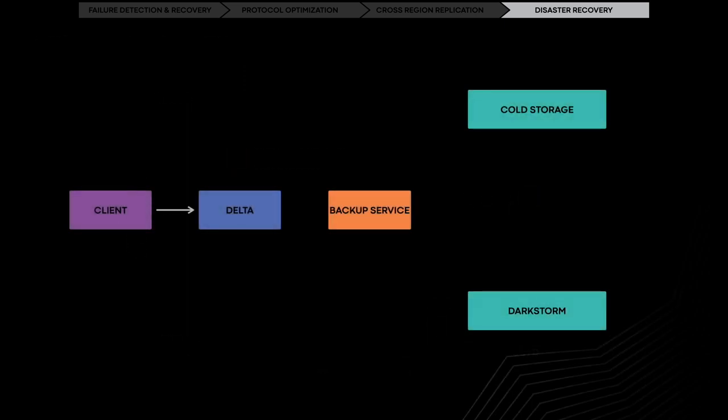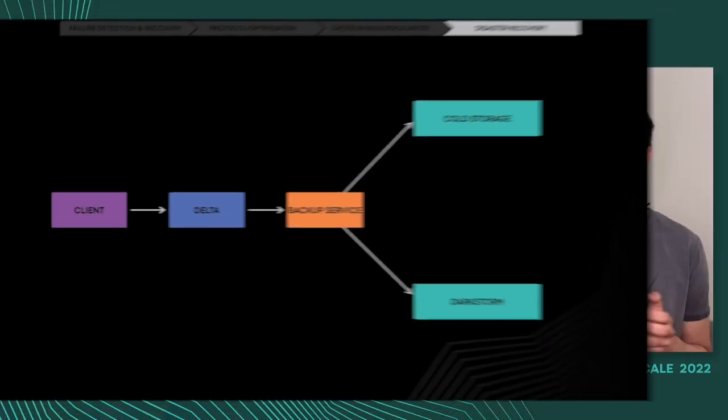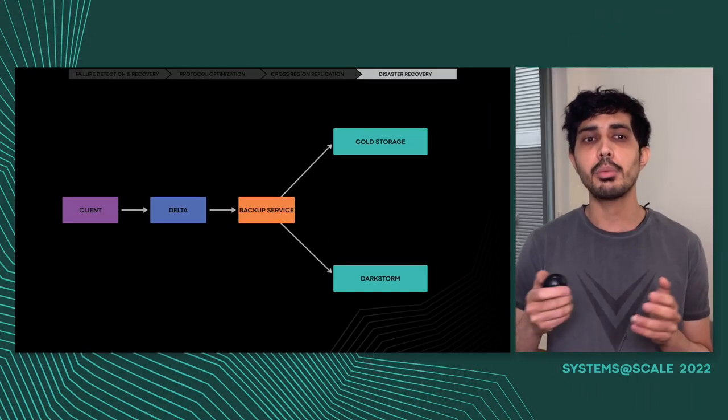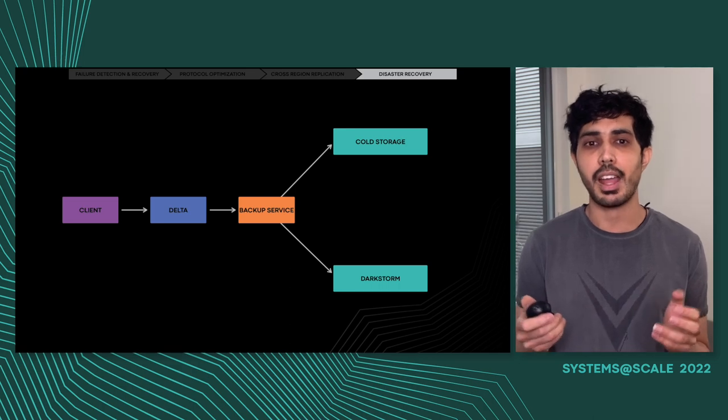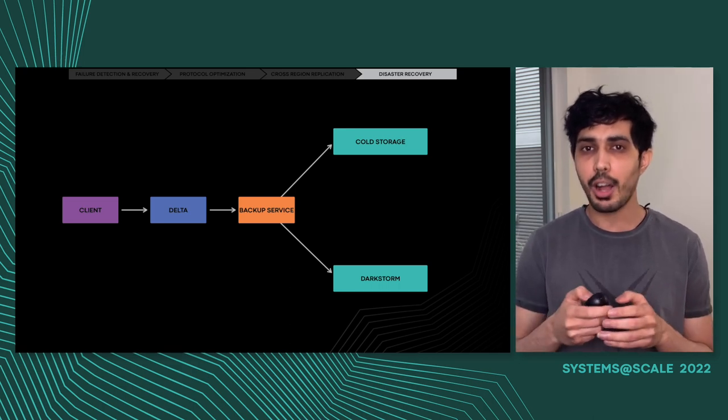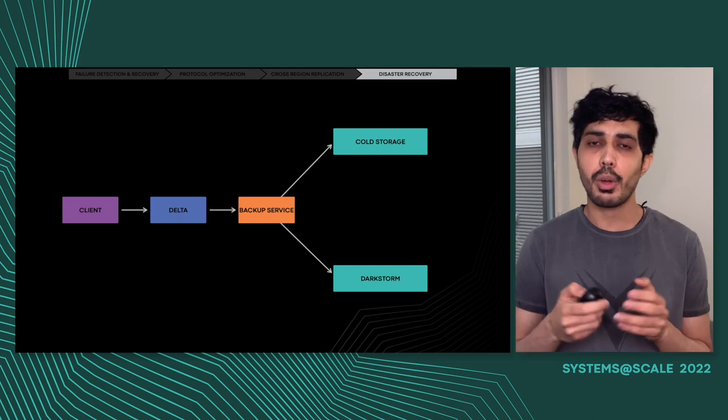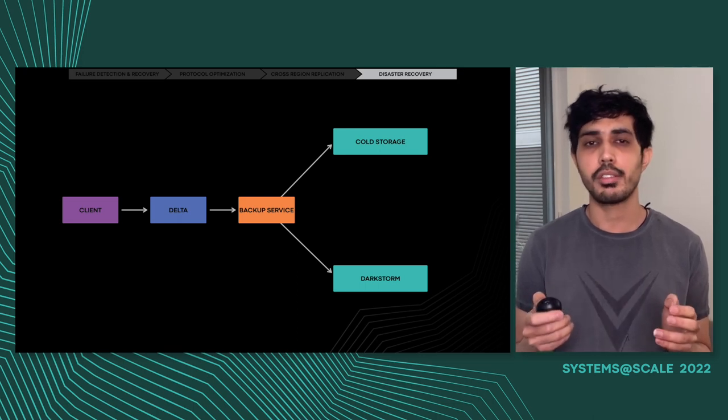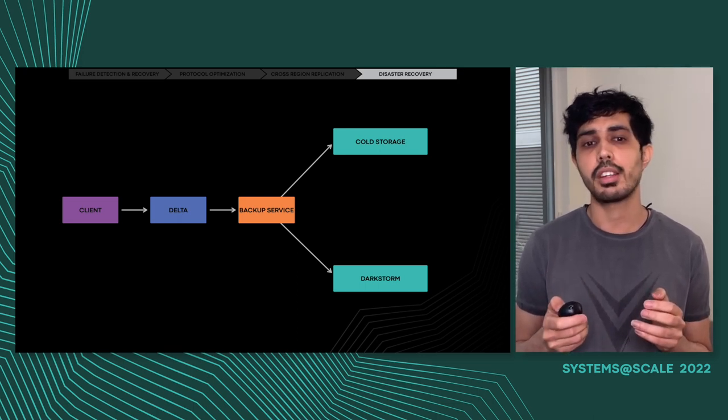As of now, we have integrated with archival services to continuously backup customer blobs to cold storage and darkstorm. Darkstorm is a bootstrap environment which is available even when all of Meta's infrastructure is down. Additionally, we have developed the ability to continuously restore objects from both cold storage and darkstorm. Out-of-box integration with archival services provide us with reliable recoverability guarantees in severely degraded environments. We have a bunch of partner teams who have integrated with our service because of our disaster recovery guarantees.